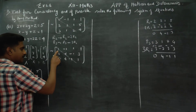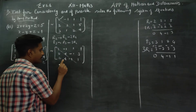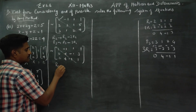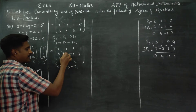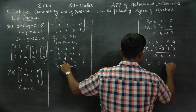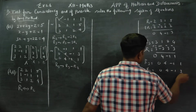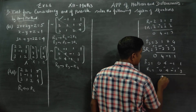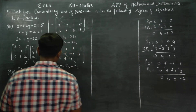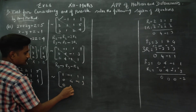Now applying R3 minus R2: 0 minus 0 is 0, 4 minus 4 is 0, minus 1 plus 1 is 0, and 1 minus 3 is minus 2. Therefore the final row echelon form is: row 1: 1, minus 1, 1, 1; row 2: 0, 4, minus 1, 3; row 3: 0, 0, 0, minus 2.